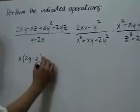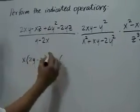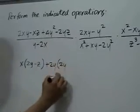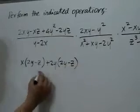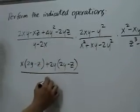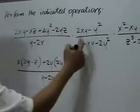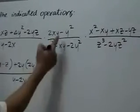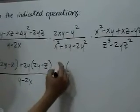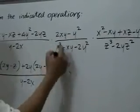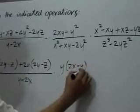For this second group, a common factor is 2y. And if 2y is factored from this term, we will be left with 2y and from the second, negative z. For this numerator, we will take out the common factor y and we will be left with 2x in the first term and negative y in the second.